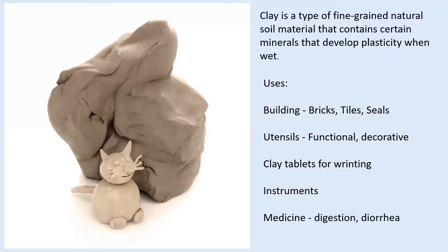So this is clay. What is clay? Quite a lot of us have worked with clay. Clay is a type of fine-grained natural soil material that contains certain minerals that develop plasticity when wet. It's essentially something dug out of the ground that is pliable and plastic when wet, so we can move it around and shape it. It'll keep its shape, dry hard, and when we fire it — which means heating it to very high temperatures — it becomes almost like stone.